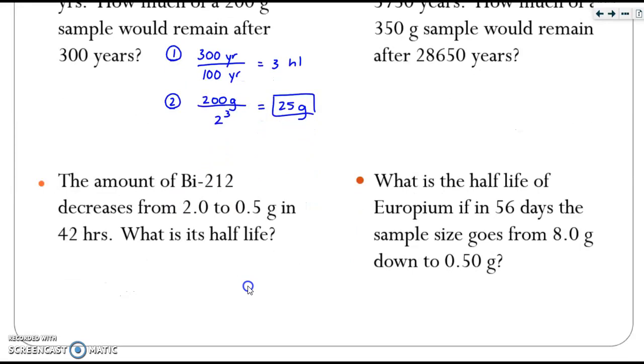So you're going to work backwards. You first have to figure out how many half-lives have gone by based on the grams, and then you can calculate the actual half-life. So here's how I like to do this. I start with the given grams. If I take my 2 grams divided by 2, I get 1.